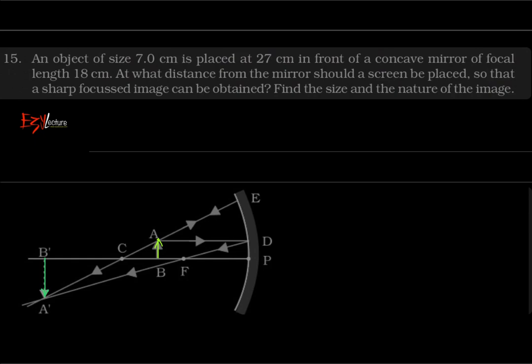Hello everyone, welcome to Easy Lecture. In this video lecture, I'm going to explain the solution of question number 15 of chapter 10, that is light. So the question goes like: an object of size 7 centimeter is placed at 27 centimeter in front of a concave mirror.